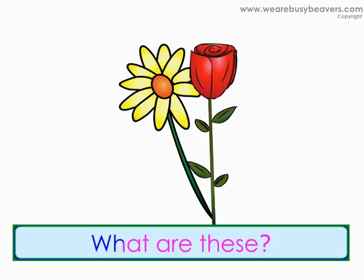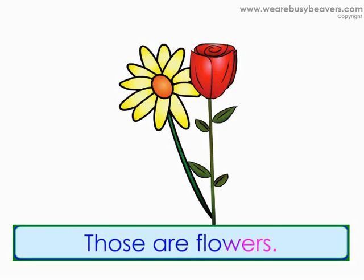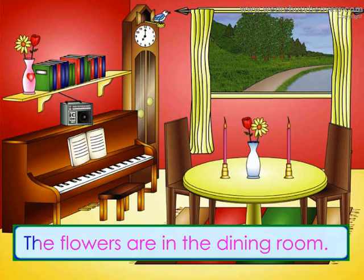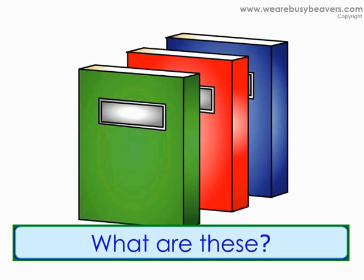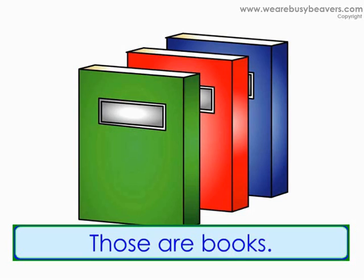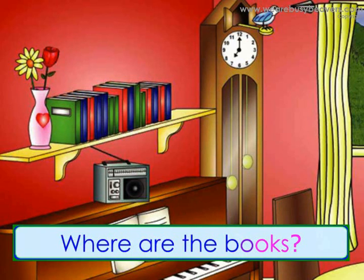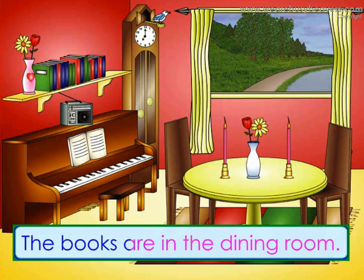What are these? Those are flowers. Where are the flowers? The flowers are in the dining room. What are these? Those are books. Where are the books? The books are in the dining room.